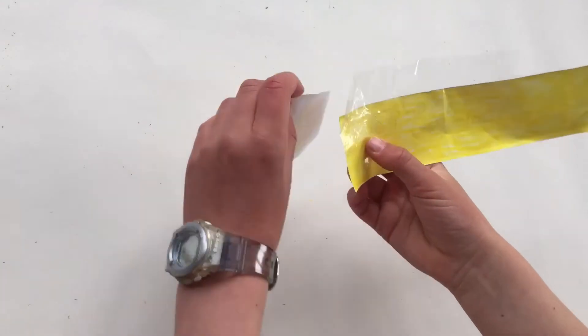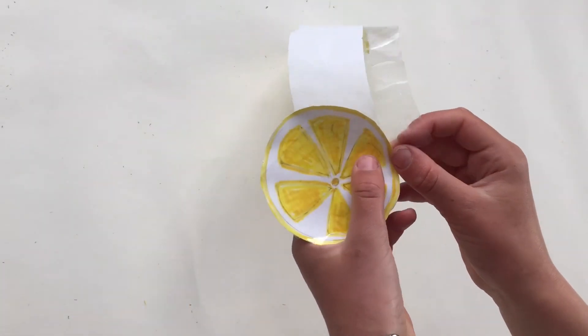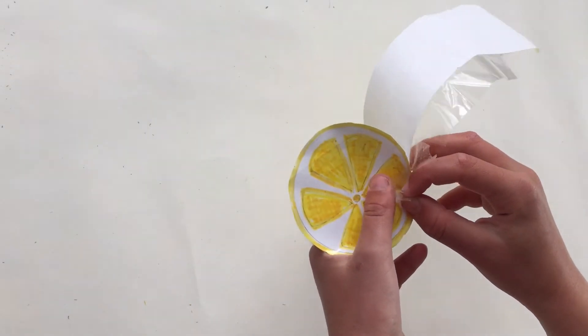Now what you need to do is get the slits from the sellotape and then just poke them onto the circle.